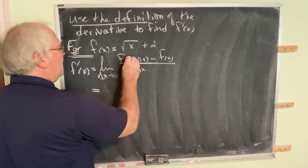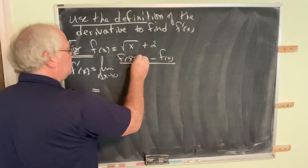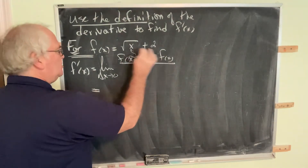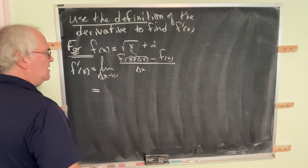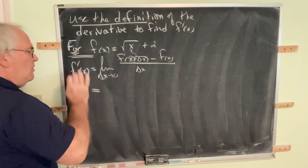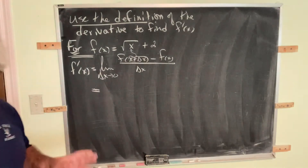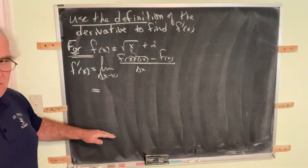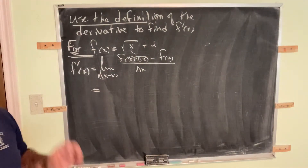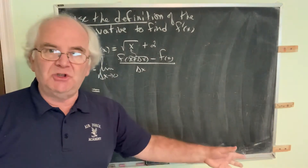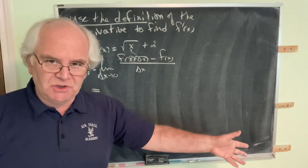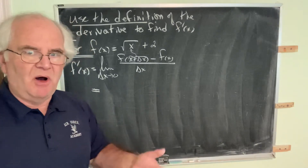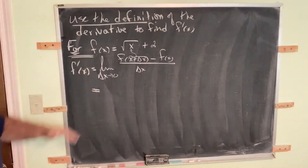So we know how to find f of something — that means this expression goes in for the value of x. When you subtract a function, you must subtract with parentheses. Perhaps a good thing to do here is to pause the video and see how far you can get. Hopefully you can get all the way to the final result, which will be a function of x — that function is the derivative.